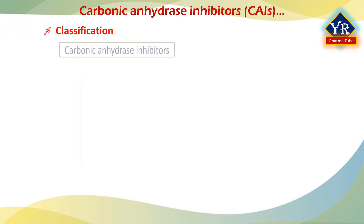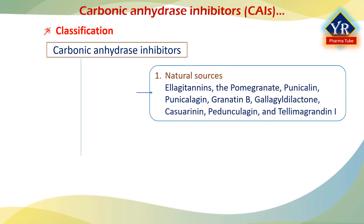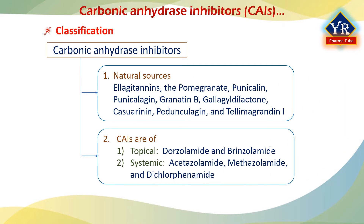Carbonic anhydrase inhibitors are divided into two major classes: natural sources and synthetic preparations available in systemic and topical forms. Elagitanins extracted from the pericarp of Punica granatum, the pomegranate, such as punicalin, punicalagin, granatin B, galagyldilactone, casuarinin, pedunculagin, and telemangradin-1, are carbonic anhydrase inhibitors. Topical carbonic anhydrase inhibitors include dorzolamide and brinzolamide, and systemic carbonic anhydrase inhibitors include acetazolamide, methazolamide, and dichlorphenamide.